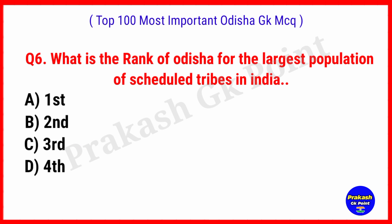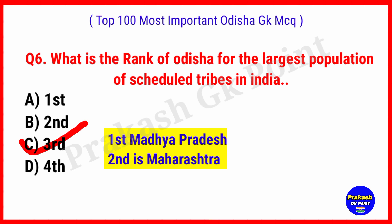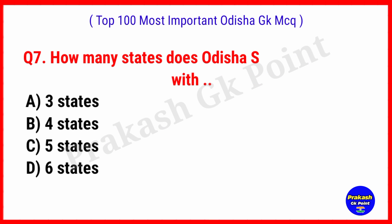What is the rank of Odisha for the largest population of scheduled tribes in India? Answer: Option C, 3rd rank. 1st is Madhya Pradesh and 2nd is Maharashtra.